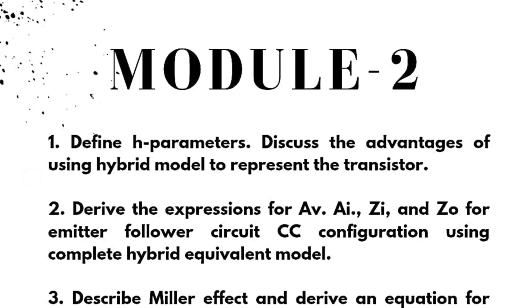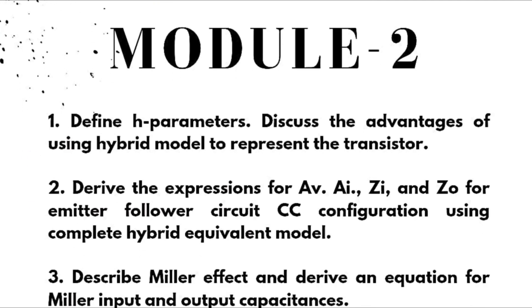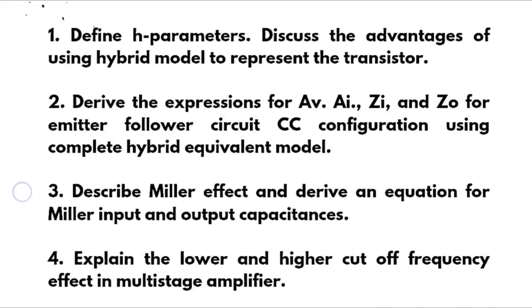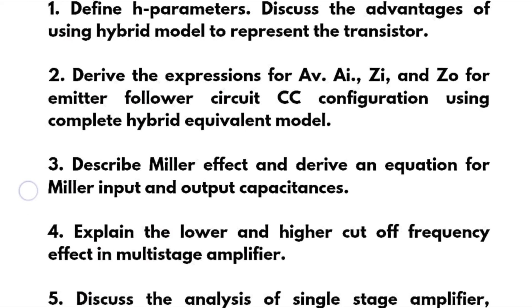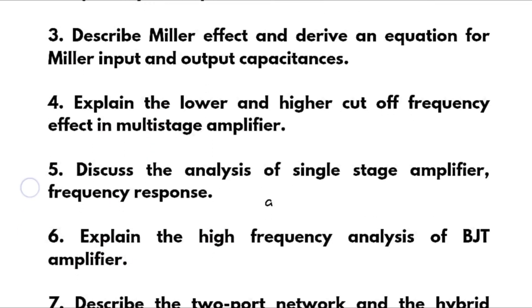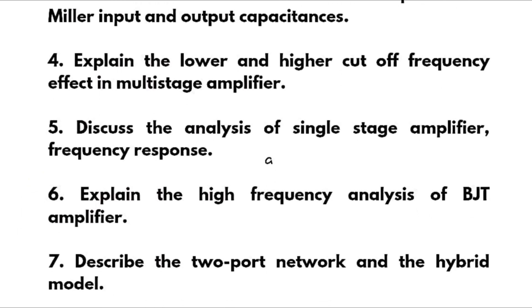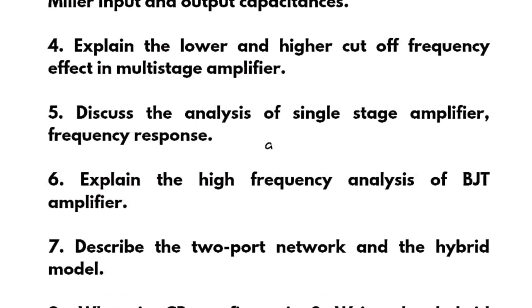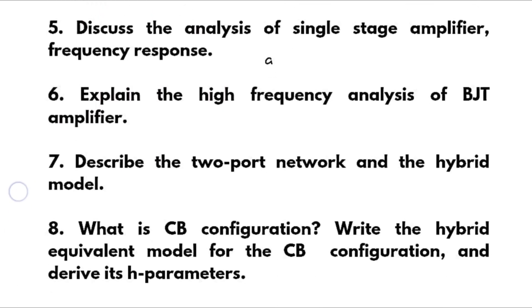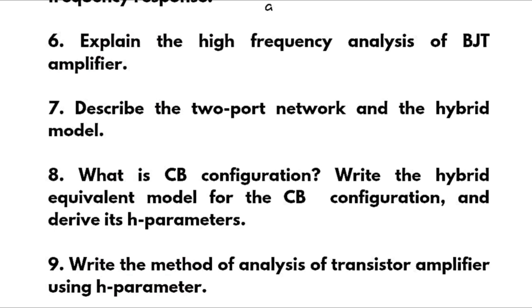Coming to module 2: define H parameters and discuss the advantage of using a hybrid model to represent the transistor. Derive the expressions for AV, AI, ZI, and ZO for the emitter follower circuit in CC configuration using the complete hybrid equivalent model. Describe Miller effect and derive an equation for Miller input and output capacitances. Explain the lower and higher cutoff frequency effect in a multi-stage amplifier. Discuss the analysis of a single-stage amplifier frequency response. Explain the high frequency analysis of BJT amplifier. Discuss the two-port network and the hybrid model.